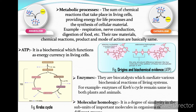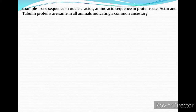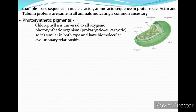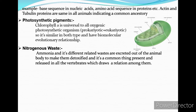Molecular homology is the degree of similarity in the subunits of important molecules in organisms of different groups — for example, base sequences in nucleic acids and amino acid sequences in proteins. Actin and tubulin proteins are the same in all animals, indicating common ancestry. Chlorophyll A is universal to all oxygenic photosynthetic organisms, showing biomolecular evolutionary relationship. Nitrogenous waste such as ammonia and related compounds are excreted in all vertebrates, drawing a relation among them.